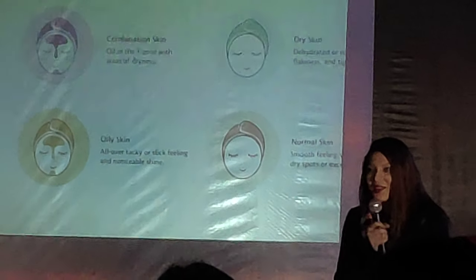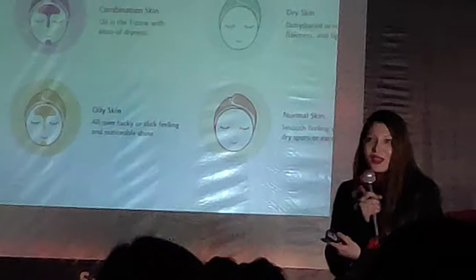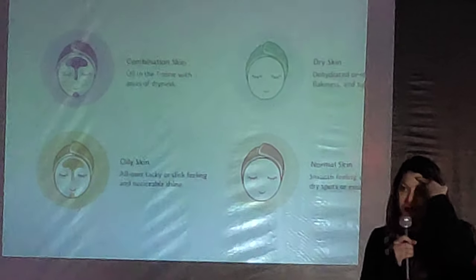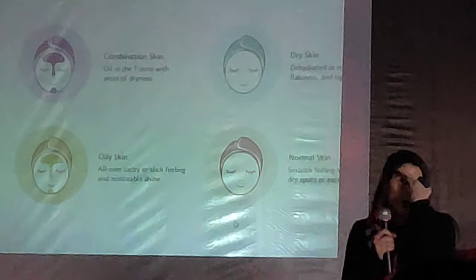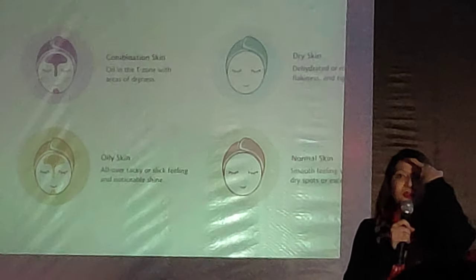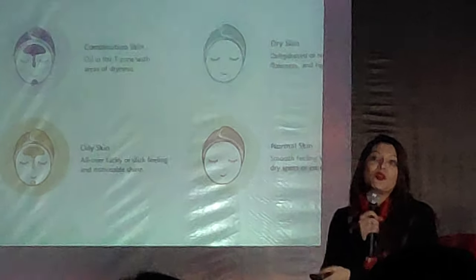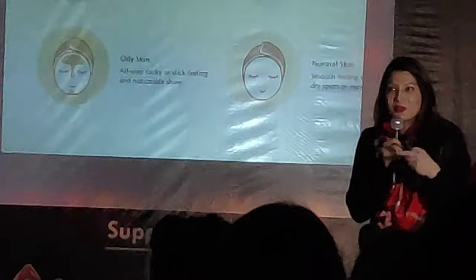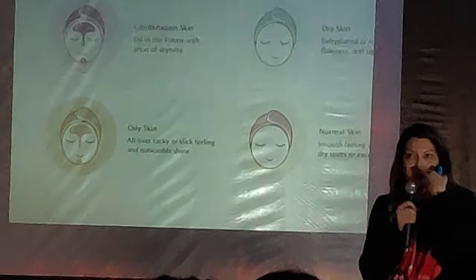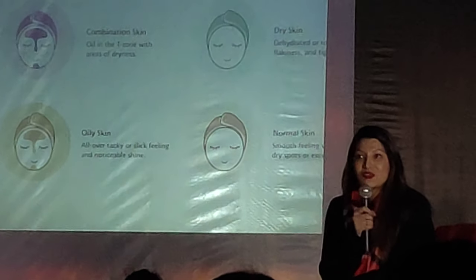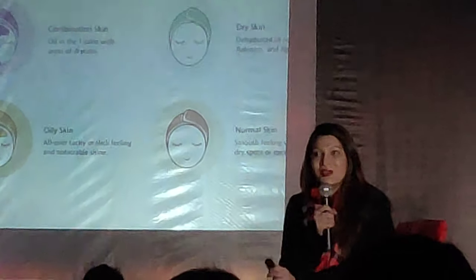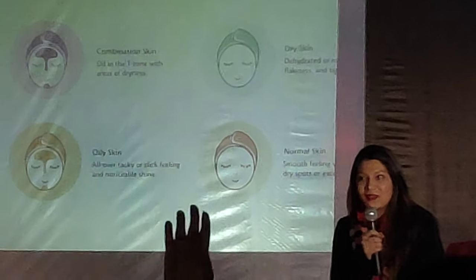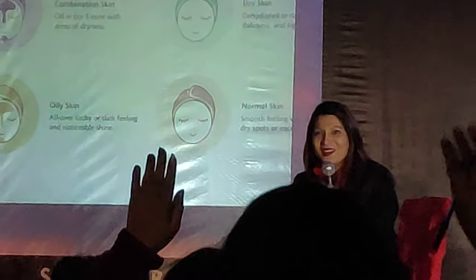Number one is oily skin. Oily skin means the T-zone — forehead, nose, and chin — is oily, and the cheeks are also oily. Combination skin is where the T-zone is oily, but the rest of your face — the cheeks — are either dry or normal. How many of you have combination skin types? Many.